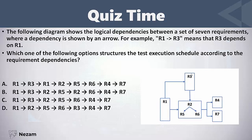So in order to execute R2, we must execute both R1 and R3 first. After R2, we cannot go to R4 or R7 yet, because the arrow comes from the module consisting of R2, R5, and R6 going to R4. In order to execute R4, we must finish R2, R5, and R6. So the correct order is: R1, then R3, then R2, then R5 and R6, then R4 and R7.